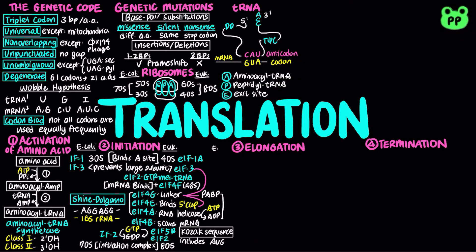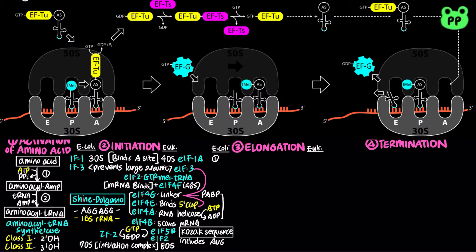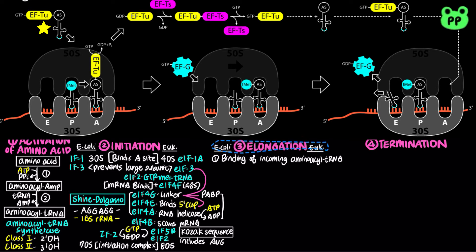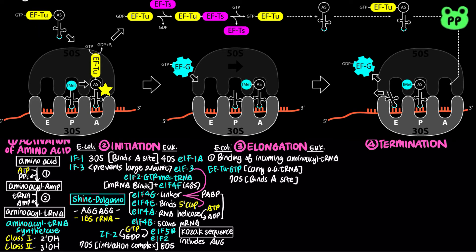During elongation, the ribosome moves along the mRNA, matching tRNAs to each codon and catalyzing peptide bond formation, which continues until a stop codon is encountered. In prokaryotic elongation, incoming aminoacyl tRNA binds to GTP-bound EF-Tu complex. The aminoacyl tRNA–EF-Tu–GTP complex then binds to the A site of the 70S initiation complex. EF-Tu hydrolyzes GTP and dissociates from the 70S ribosome. The EF-Tu–GTP complex is regenerated by EF-Ts, which is a GDP-GTP exchanger.